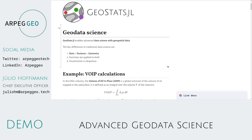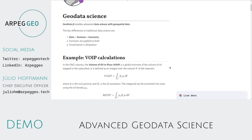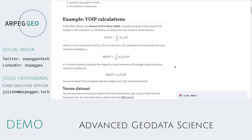To illustrate what this geodata science platform can do, I will start here with an example in the oil and gas industry. The volume of oil in place is a global estimate of the volume of oil trapped in the subsurface. You can define this volume of oil in place as an integral over the volume of the reservoir of the saturation of oil times the porosity times this infinitesimal volume element. You can convert this volume into mass by multiplying the integral by the density of oil.